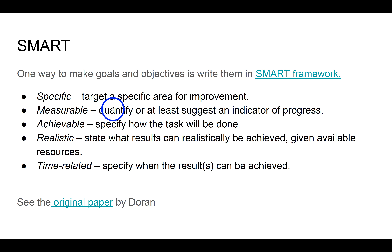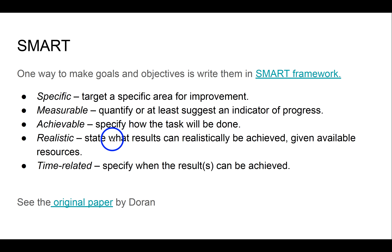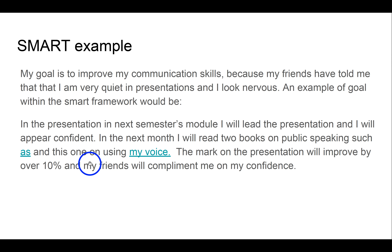SMART goals are a way of writing goals that helps you achieve them. You want the goal to be Specific — don't be vague. You want it to be Measurable — how can you tell you're getting close to achieving it? It should be Achievable — we all want to play for England in football, but we have to be realistic about what we can do. It should be Realistic within a given time frame, and Time-related — not just a vague 'I'll improve my programming skills' but something specific with a deadline.